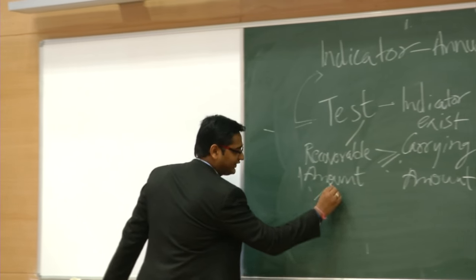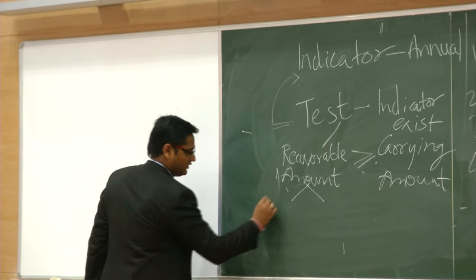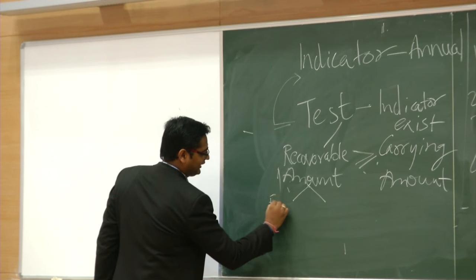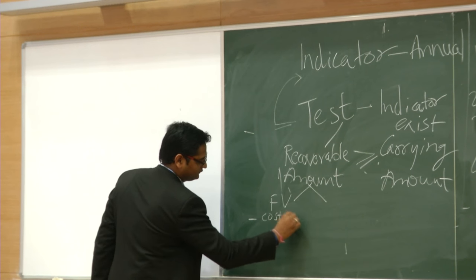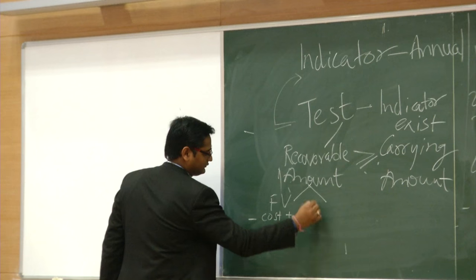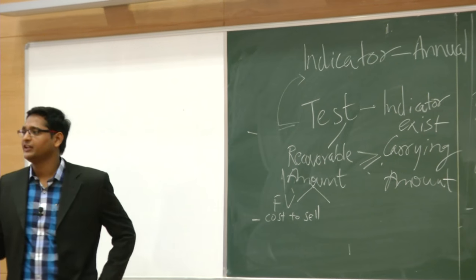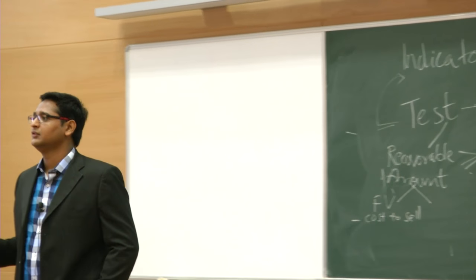Recoverable amount is the higher of two things: fair value less cost to sell, and value in use. Fair value means market value — if I want to sell it today, what is the market value I will get minus my cost to sell.